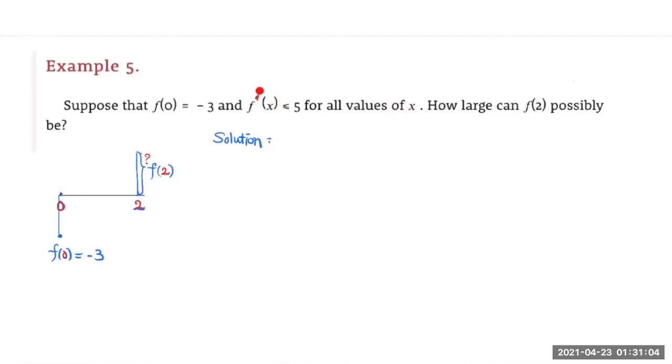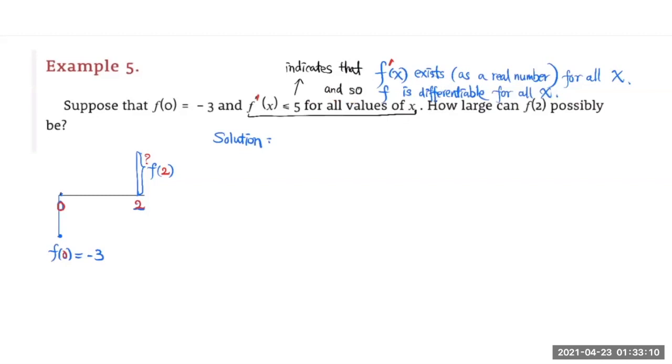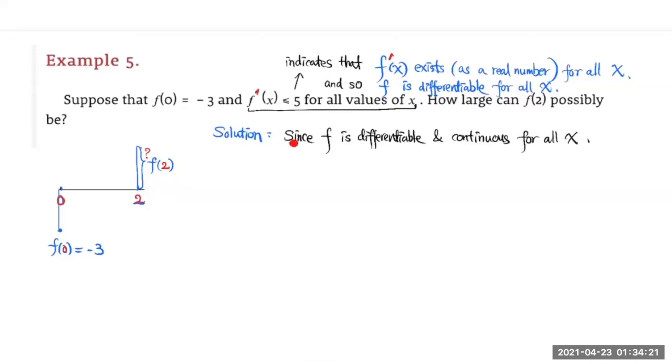that indicates that f'(x) exists for all real numbers, and so the function f is differentiable for all x. Since differentiability implies continuity, the function f is also continuous for all x. Now since the function f is differentiable and continuous for all x, it satisfies the two hypotheses of the Mean Value Theorem. So we can apply the Mean Value Theorem.